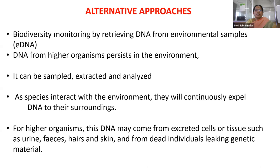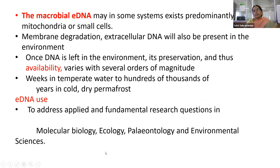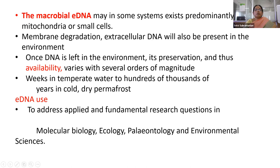A given environmental sample will reflect the richness of species present in that environment. For higher organisms, DNA may come from excreted cells or tissue such as urine, feces, hair, skin, or from dead individuals leaking genetic material. Carcasses in water bodies or terrestrial areas also leak DNA. Microbial DNA comes from microbes, while eukaryotic DNA exists in the genome as well as in mitochondria — and in chloroplasts for plants. Membrane degradation allows this DNA to become available as extracellular DNA in the environment.